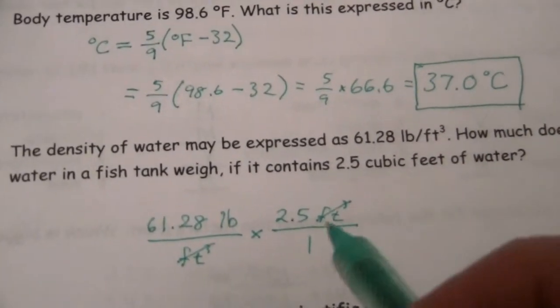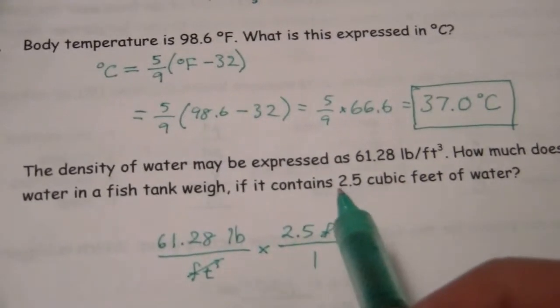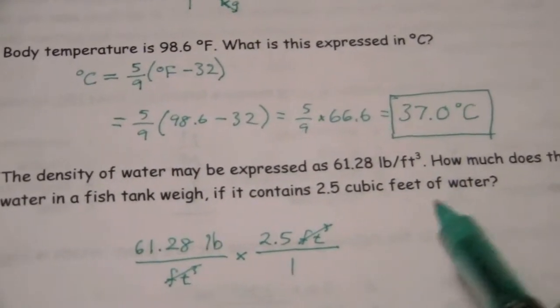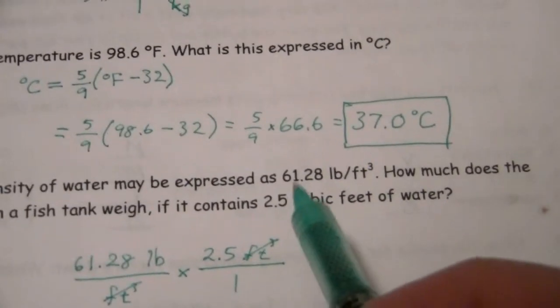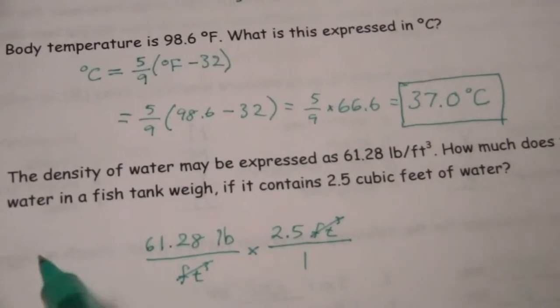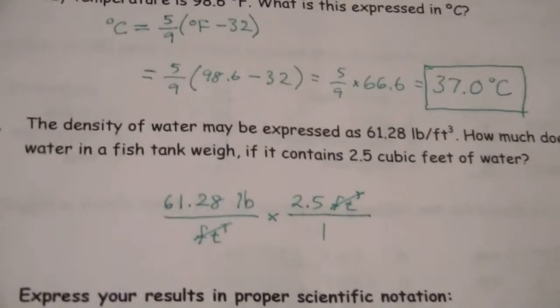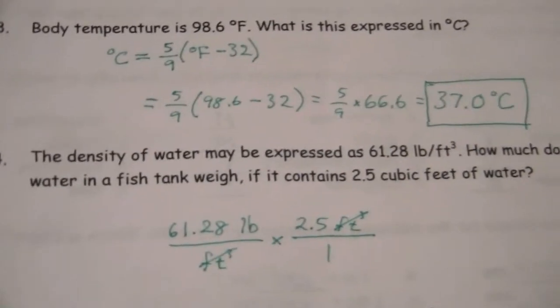Now note that that's the same thing as if you started with, well, I have 2.5 cubic feet of water, and you multiplied that by 61.28 pounds per cubic feet. It doesn't matter whether you have the 2.5 first or second, you'll end up with the same result.